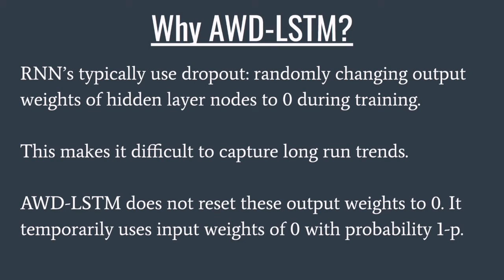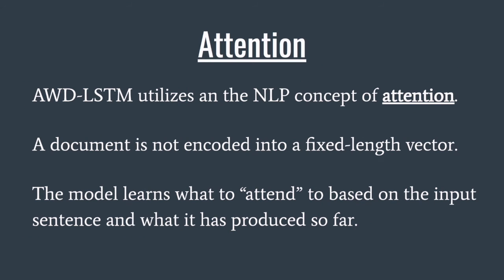Instead, AWD LSTM temporarily uses input weights of 0 without permanently changing the weights, with a certain probability of 1-p. Next, I'd like to briefly touch on the concept of attention, as it is relevant to the new visualization technique we utilized. Certain NLP models, such as AWD LSTM, use attention to interpret sequences. Rather than encode an entire sequence into a fixed length vector, the decoder attends to different parts of the source at each step of the output. The model learns what to attend to based on the input of the sequence and what it has produced so far.